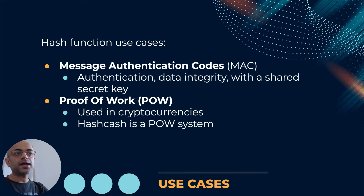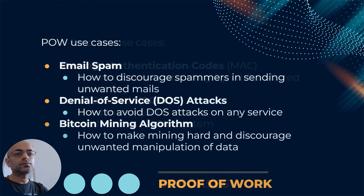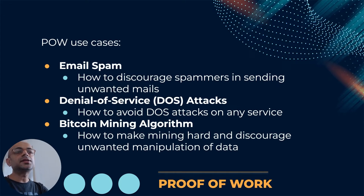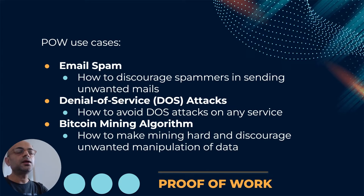Another important function of hash functions is proof of work, used in cryptocurrencies. Hashcash is a proof-of-work system normally used for spam detection in emails. Use cases of proof of work include email spam detection, discouraging spammers from sending unwanted emails, preventing denial-of-service (DoS) attacks on any service, and in Bitcoin mining algorithms, making the mining process very hard to discourage unwanted manipulation of data in the Bitcoin network.